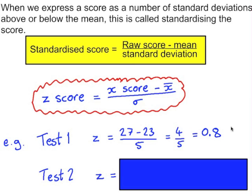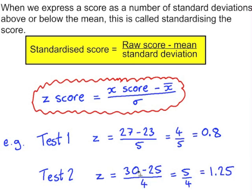In test 2, Amy's z-score was 30 minus 25 divided by 4, which is 5 over 4 — giving 1.25. Her score in test 1 was just under one standard deviation above the mean, and in test 2 just over one standard deviation above the mean. In test 1 her z-score was 0.8, meaning 0.8 standard deviations above the mean, and in test 2 her z-score was 1.25, meaning 1.25 standard deviations above the mean.